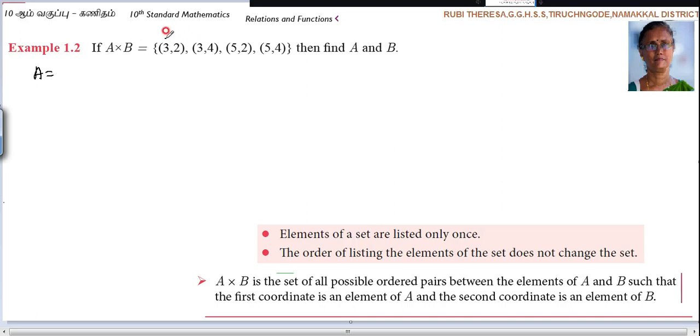So what are the first elements? 3, 3, 5, 5. Is it possible to write one more time 3? No. You see the other note. Elements of a set are listed only once. You should not repeat it again. But the order of listing the elements of the set does not change the set. So 3 you have to write only one time. So 3 comma 5.